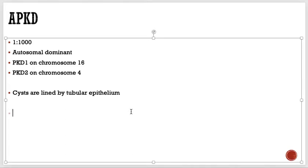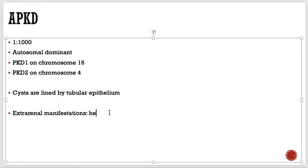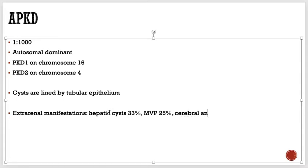Many patients who have adult polycystic kidney disease have extra-renal manifestations. Around 33% have hepatic cysts — about one third of patients. Around 25% have mitral valve prolapse — about one fourth of patients. Very importantly, many of them have cerebral aneurysms — about 10%, or one in ten patients.